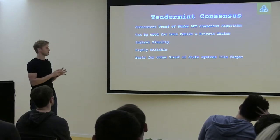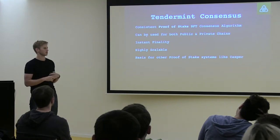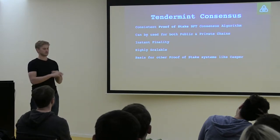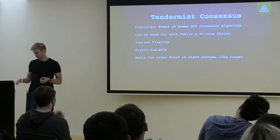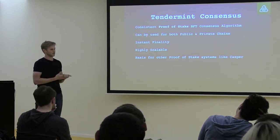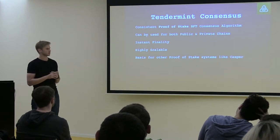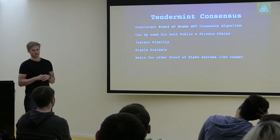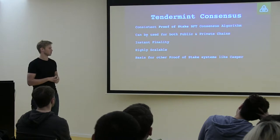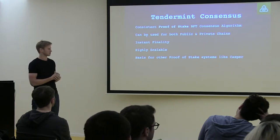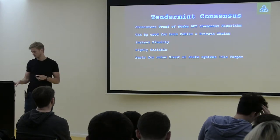This finality also means that every block can be relied upon — that this is the real block. There's not going to be another block; we don't have to wait for a bunch of confirmations to make sure it doesn't get rolled back. Tendermint is also very scalable — it can do something like 10,000 transactions per second, with block times of one to three seconds with around 100 validators across all continents. Casper is based to some extent on Tendermint.